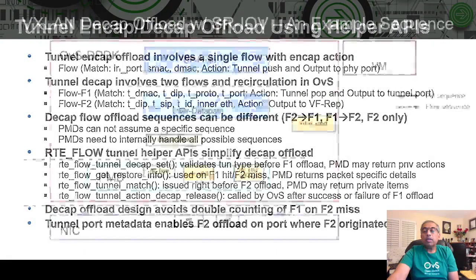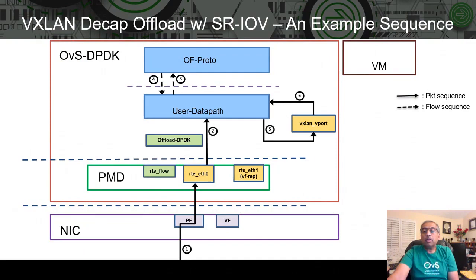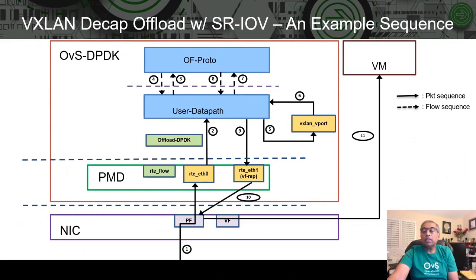Here is an example sequence of how VXLAN NCAP offloading works. A tunnel packet comes through the PMD to the user data path. At this point, the user data path does not know about the flow, so it sends it to the OFPROTO layer, which installs rule F1, resulting in creation of a tunnel vport. Then processing F2 begins — again, the user data path doesn't know the flow, so it sends it to OFPROTO, which installs the second rule F2. Both rules are now installed in the user data path, and the packet is sent through the VF representer, which flows through the NIC from the PF, loopbacks inside the NIC, and goes to the VM.